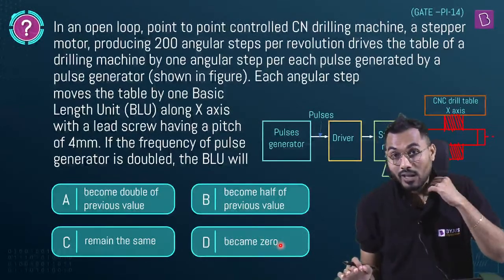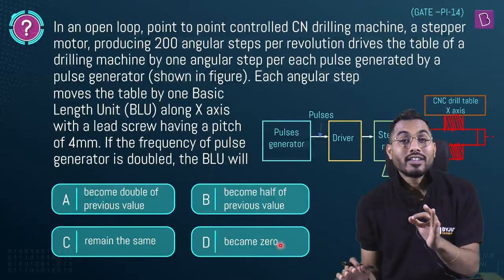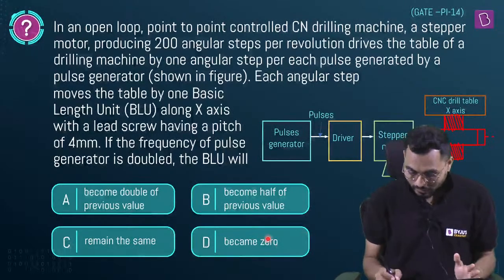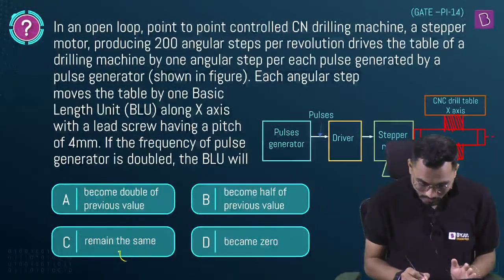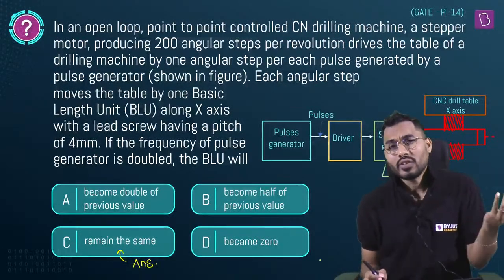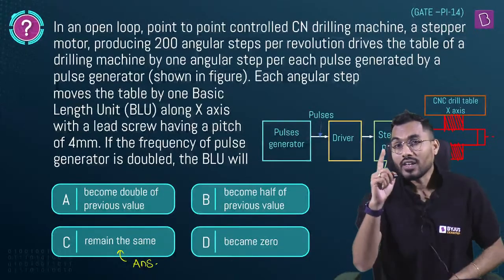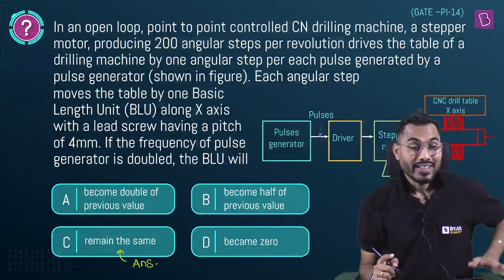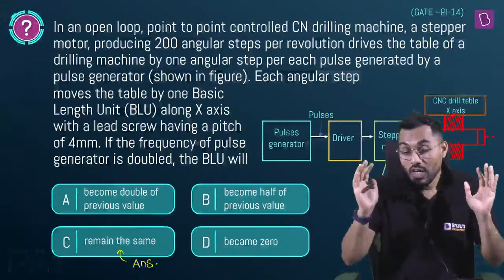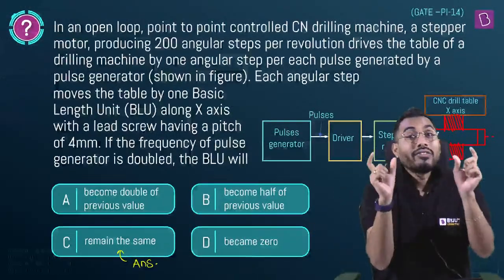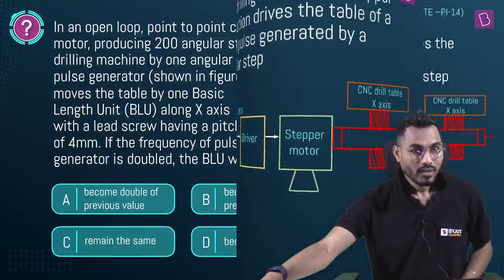BLU is independent of frequency. Doubling the frequency does not change the BLU — BLU remains the same. The answer is C. However, frequency does affect feed rate (table velocity). If frequency increases, table velocity (feed rate) changes, but BLU remains constant.